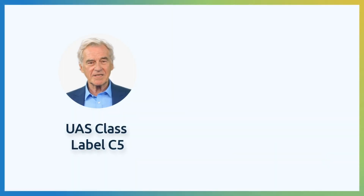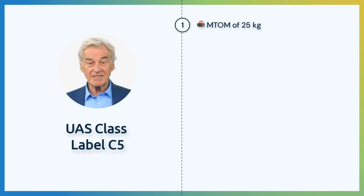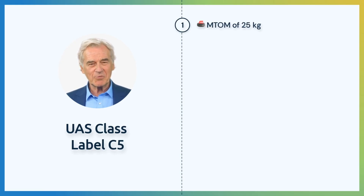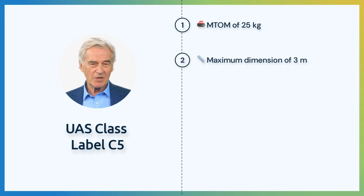C-5 drones can be used in the specific category STS-01. The C-5 class label has the following characteristics. The UA shall have a maximum takeoff mass of 25 kg — this weight includes its payload. The UA shall have a maximum characteristic dimension under 3 m, and all UA configurations shall be considered.